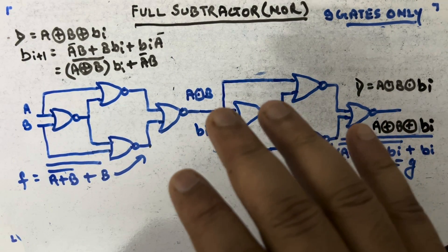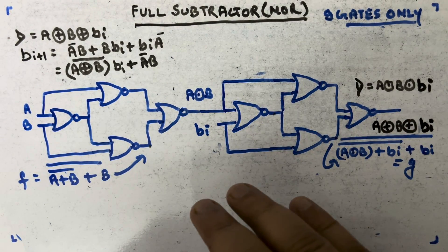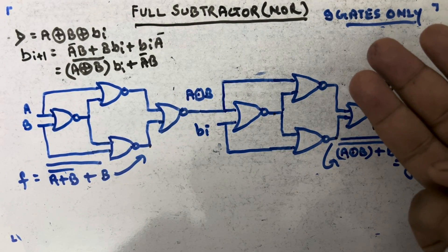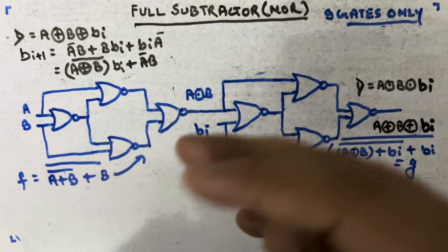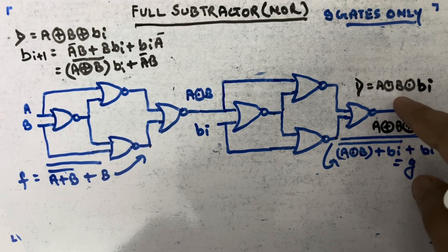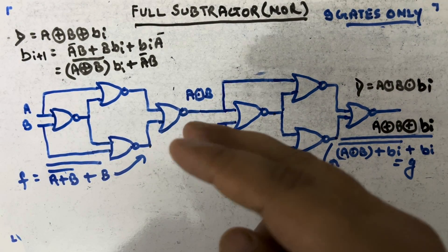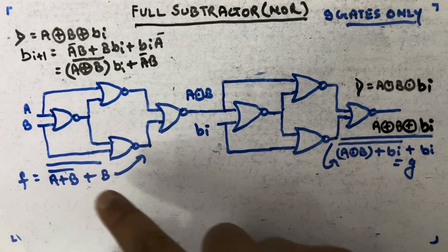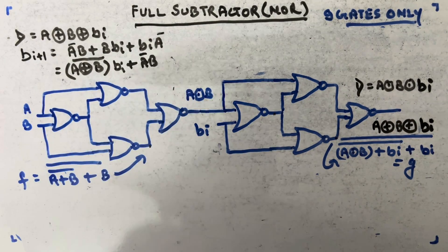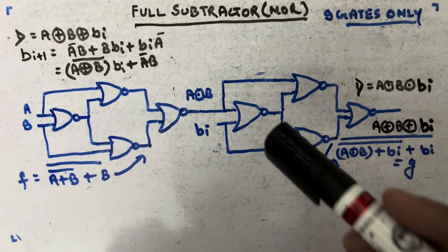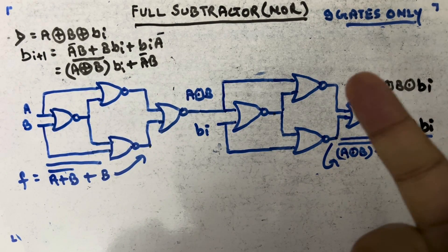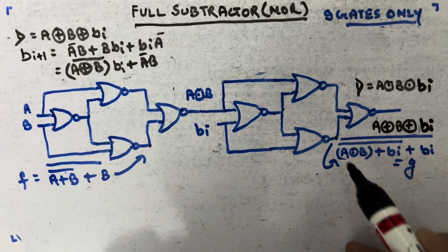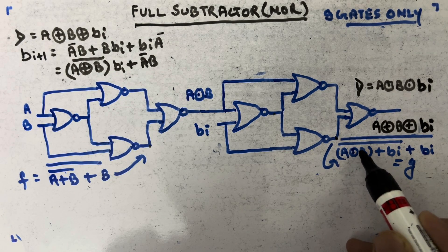For an odd number of inputs, if you take XNOR or XOR between them the result is the other one - XOR of three gives XNOR of three, XOR of five gives XNOR of five. For even inputs, A XNOR B gives A XOR B_bar. We've seen this in the full adder. The main part is the borrow expression - we can take one extra gate for nine total, producing the borrow.